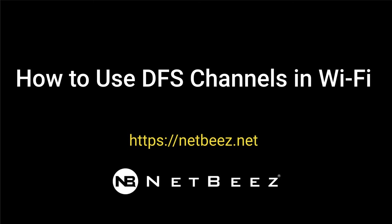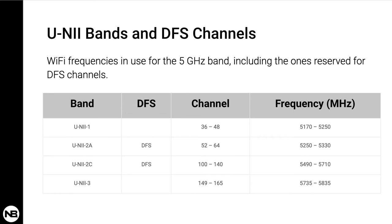Hello and welcome to NetBea's quick how-to videos. Today we'll talk about how to use DFS channels in Wi-Fi. DFS means Dynamic Frequency Selection and is a Wi-Fi function that enables WLAN to use 5GHz frequencies that are generally reserved for radars. One main benefit of using DFS channels is to utilize under-serviced frequencies to increase the number of available Wi-Fi channels.